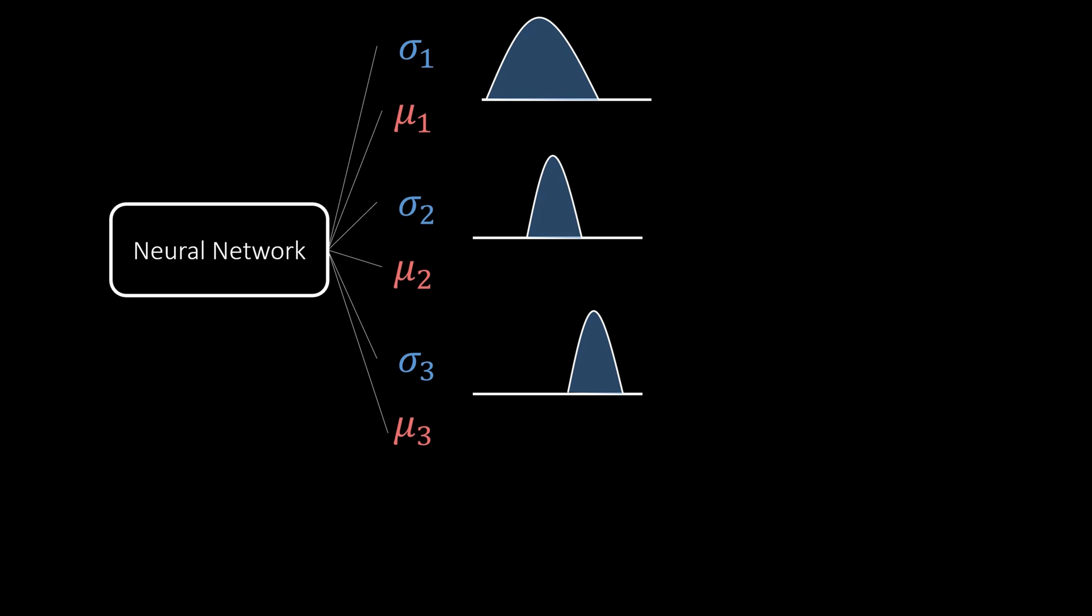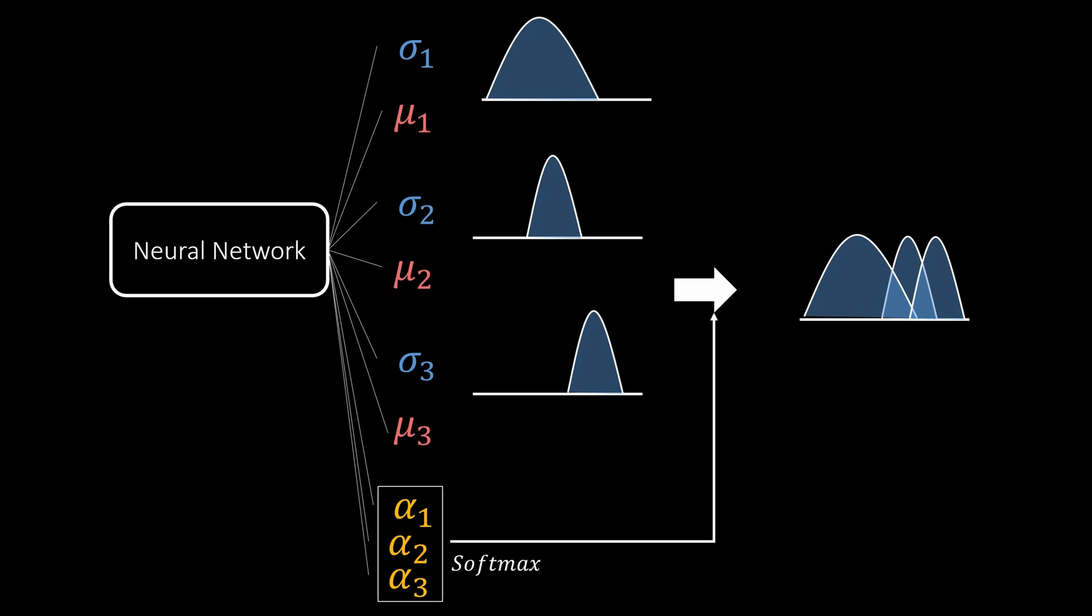In the regression case, a simple extension of predicting a normal distribution is to predict several normal distributions. This allows the model to build a mixture of gaussians that can form a more general function. These so-called mixture density models were published in 1994 by Christopher Bishop. The output of our network are now multiple parameters of these distributions. The distributions are then combined according to mixing coefficients that are also learned by the model. The result is a more general distribution over our target variable and this can again be optimized using the maximum likelihood approach. In the hands-on part, I will share some more details around mixture density models.